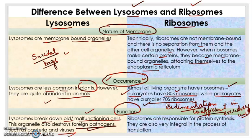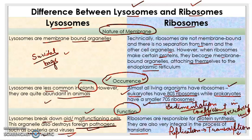As for ribosomes, they are responsible for protein synthesis and are very integral in the process of translation. There are different processes in the cell: first is DNA replication, where DNA replicates. Then there is transcription, where DNA converts into RNA. After transcription comes translation, where mRNA helps in the formation of proteins. Ribosomes are responsible for protein synthesis and are integral in translation, during which mRNA forms proteins.